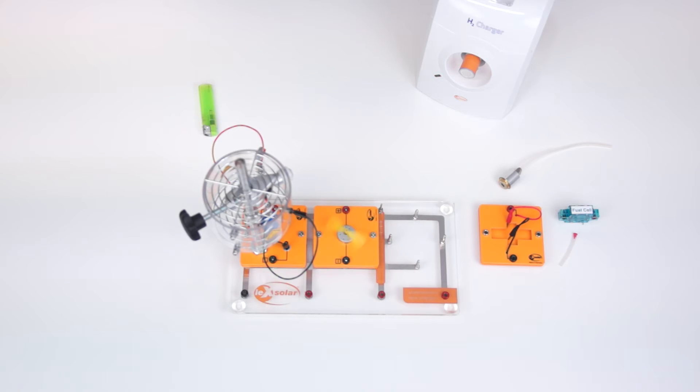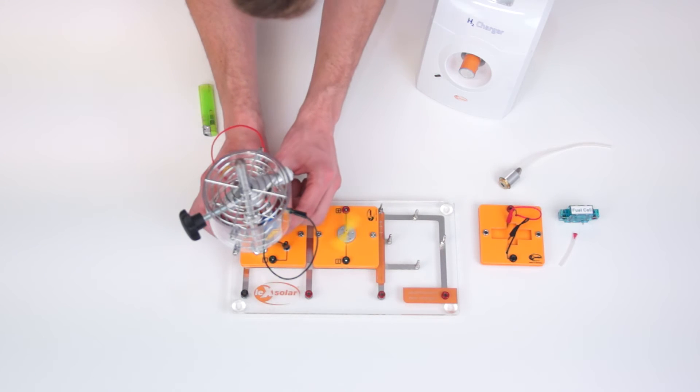In the second part of our experiment we want to use the PEM fuel cell. For this we turn off the gas supply and replace the SOFC module with the PEM fuel cell.